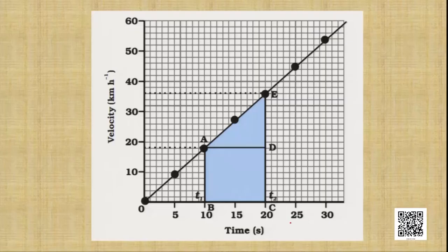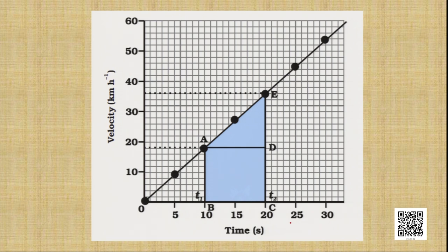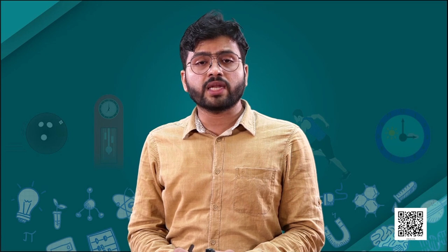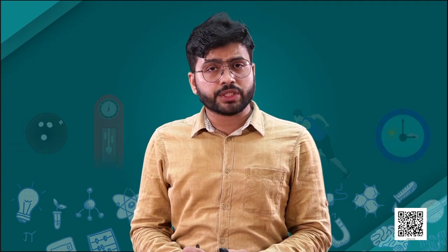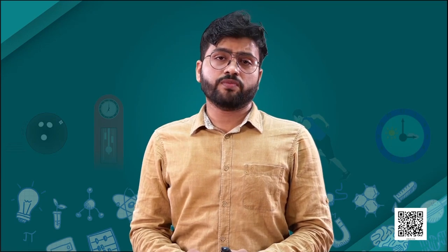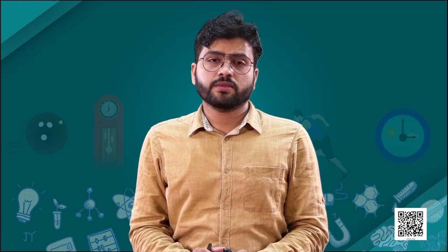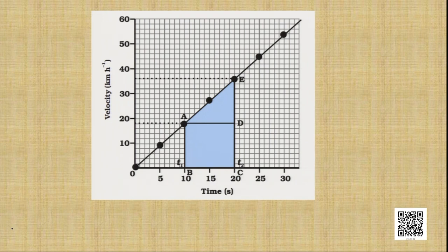If we plot this data on a graph, what we observe is that the graph of an object moving with uniform acceleration is a straight line passing through the origin. From this particular graph we can also calculate the distance traveled by that object when it is executing uniform acceleration. We will try to find out the distance traveled by that car in the time interval from the 10th second to the 20th second.